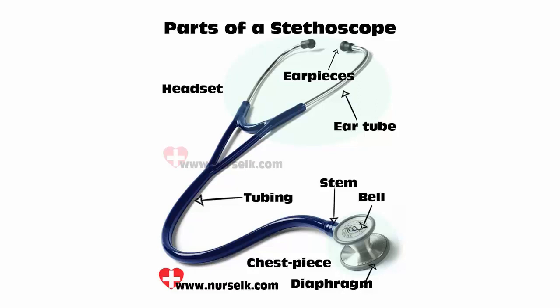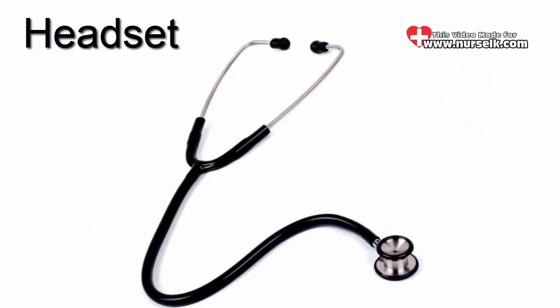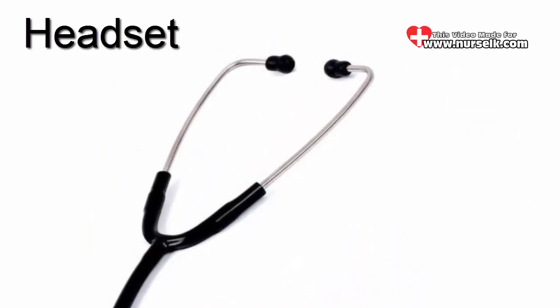Parts of a stethoscope. Headset. The headset is the combined components of the upper half of the stethoscope which include the ear tubes, tension springs and ear pieces.